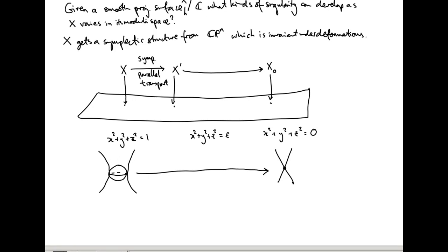Elsewhere, the symplectic parallel transport does make sense — you can identify points out here with points out there. There's some bad part called the vanishing cycle which gets crushed to a point, and everything else gets mapped nicely into the smooth part of the singular fiber. The red boundary that I've drawn is called the link of the singularity — it's a contact-type hypersurface from the point of view of symplectic geometry. We can find a copy of it in any of the smooth fibers, just by parallel transporting the link out to the other fibers.